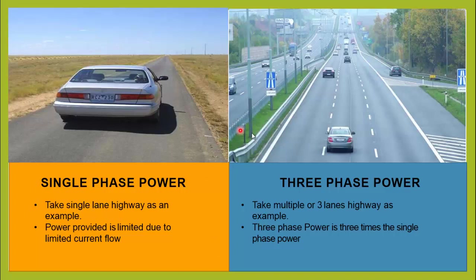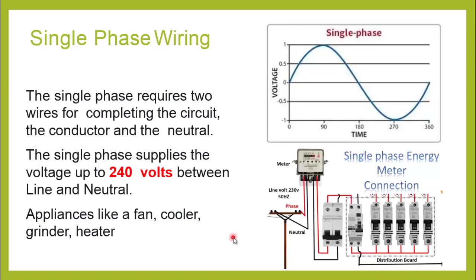Let us begin by describing the difference between these two using this example. On my left side you can see a single road on which a single car can pass — this resembles single-phase power. On the right side you can see a highway with three lanes where three cars can pass at the same time. The major difference is that single-phase is used to supply power to lighter loads such as electronic appliances, lights, fans, and single-phase motors, while three-phase is used to deliver power to large loads such as three-phase heavy-duty machinery, three-phase motors, and large complexes.